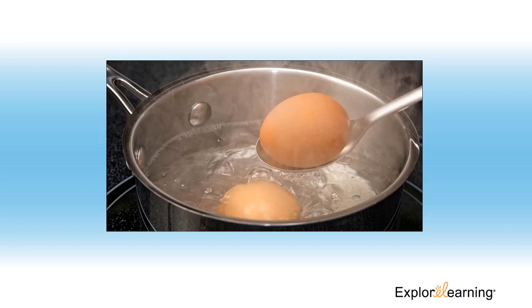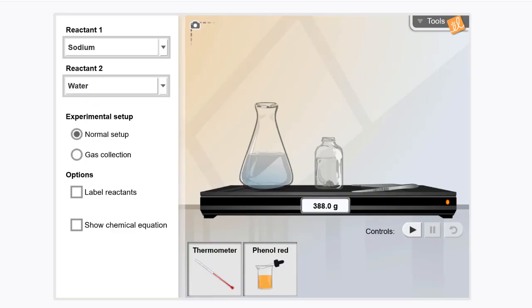Let's explore the chemical changes gizmo together in order to understand why this is not possible. A chemical change, like boiling an egg, occurs when one or more substances, called reactants, are transformed into different substances or products.